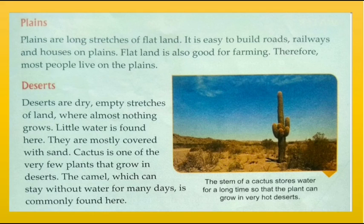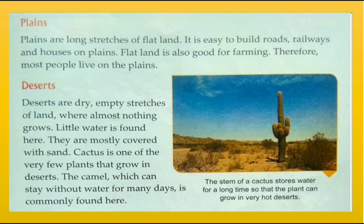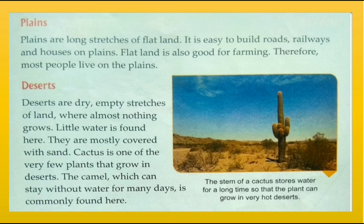Deserts are dry, empty stretches of land where almost nothing grows and little water is found. They are mostly covered with sand. Cactus is one of the very few plants that grow in deserts. The camel, which can stay without water for many days, is commonly found here. The stem of a cactus stores water for a long time so the plant can grow in very hot deserts.